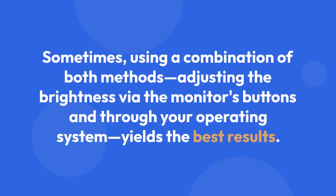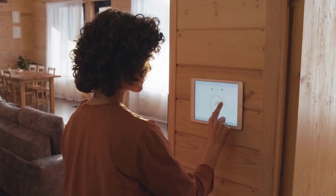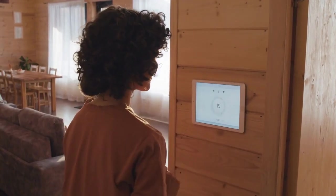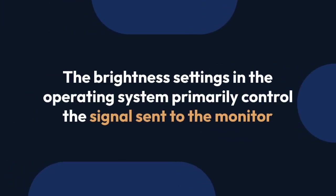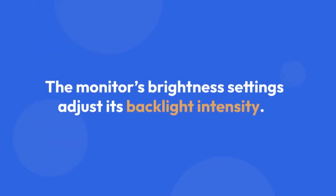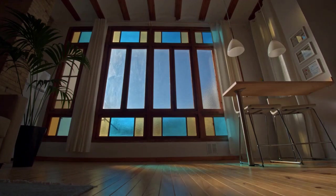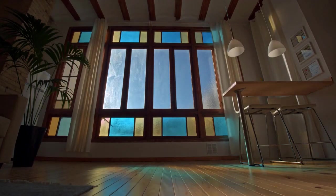Combining methods. Sometimes using a combination of both methods — adjusting brightness via the monitor's buttons and through your operating system — yields the best results. You might need to adjust the monitor's brightness first to a comfortable starting point, then fine-tune it with the OS settings. Remember that OS settings primarily control the signal sent to the monitor, while the monitor's brightness settings adjust its backlight intensity. Optimizing both helps achieve your desired screen brightness.